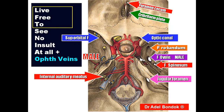This is the jugular foramen. It transmits three nerves — cranial nerves nine, ten, and eleven: the glossopharyngeal, vagus, and accessory nerves — and two veins: the inferior petrosal sinus and sigmoid sinus, which continue as the internal jugular vein.